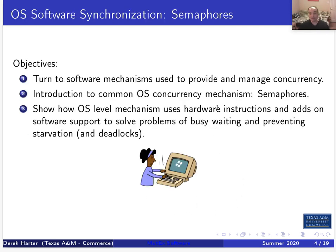If you read our textbook, you need to read all the sections about the different software mechanisms that operating systems implement. I'm going to talk about semaphores in this video. Our objective is to look at the software mechanisms the OS provides to manage concurrency. We'll also make certain you know the connection between the hardware instructions provided and how the OS uses those to build these software mechanisms.